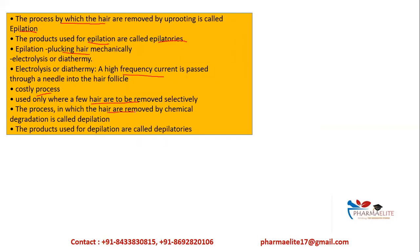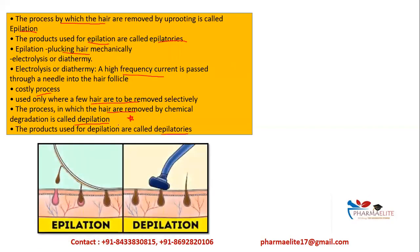Electrolysis and diathermy are used only when a few hairs are to be removed very selectively from one particular region. The process wherein hair are removed by chemical degradation is called depilation, and the products used for this process are called depilatories. Epilation involves uprooting hair, while depilation involves chemical treatment or degradation.